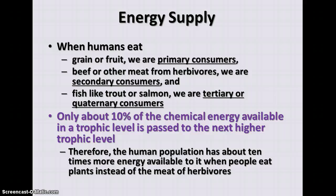When humans eat grains, fruit, or vegetables we are primary consumers; when we eat meat like hamburgers we are secondary consumers; when we eat fish we are usually tertiary or quaternary consumers. Only 10% of the chemical energy available at each trophic level is passed on to the next higher level. If we eat more plants than meat from herbivores, we have 10 times more energy available than at the secondary consumer level. That doesn't necessarily mean everyone should be vegetarian — we are omnivores — but we do get more of the ultimate available energy when eating plant material compared to animal material. This concludes the notes on the flow of matter and energy.